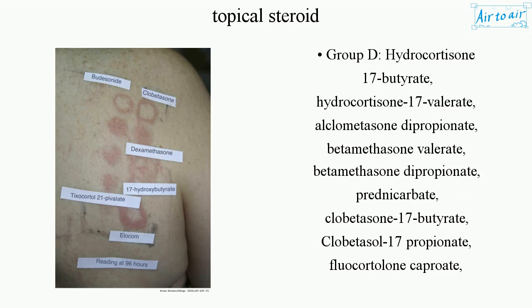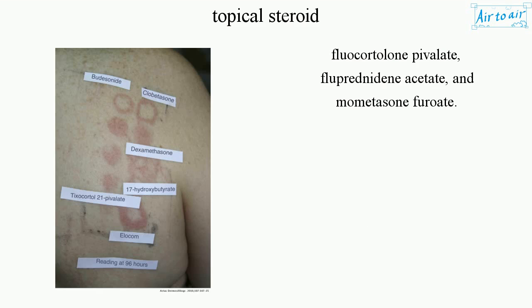Group D: hydrocortisone 17-butyrate, hydrocortisone 17-valerate, alclomethasone dipropionate, betamethasone valerate, betamethasone dipropionate, prednicarbate, clobetasone 17-butyrate, clobetasol 17-propionate, fluocortolone caproate, fluocortolone pivalate, and fluprednidine acetate.